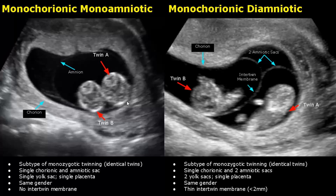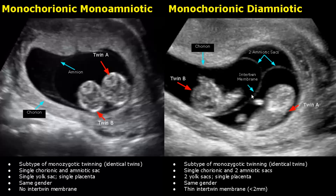The second subtype is monochorionic-diamniotic. It has a single chorionic sac but two amniotic sacs. Two yolk sacs will be found, but it will also have only a single placenta. The twins have the same gender — both will be either male or female. An intertwin membrane will be seen between the twins; it is made of two layers of amnion and usually measures less than 2 mm. Sometimes this membrane is very difficult to see.